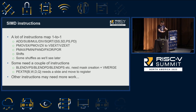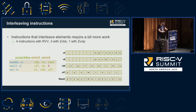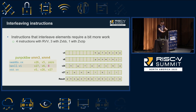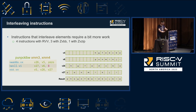Other instructions may need more work. Here's one example of an x86 instruction that interleaves 8-bit elements into 16-bit elements. In RISC-V this can be done with widening adds and then shifting and ORing them together, or with a widening shift to save one instruction. There's also the zvzip extension in fast-track that should be able to do this in one instruction — so looking forward to that.